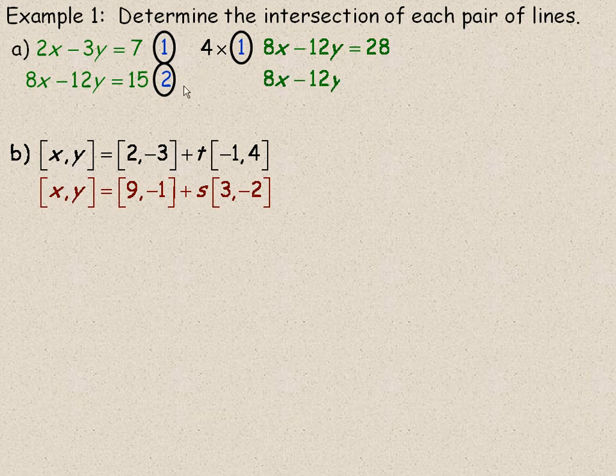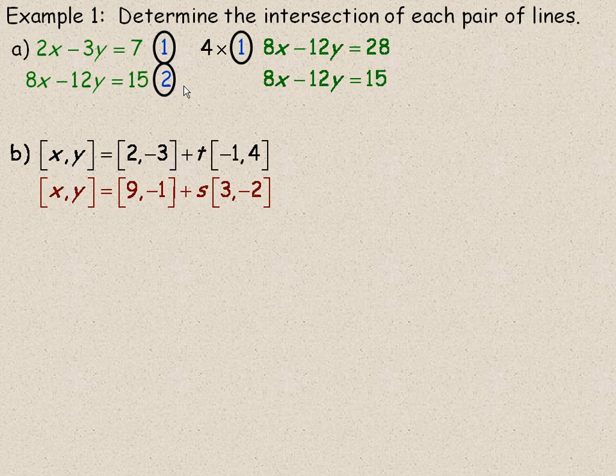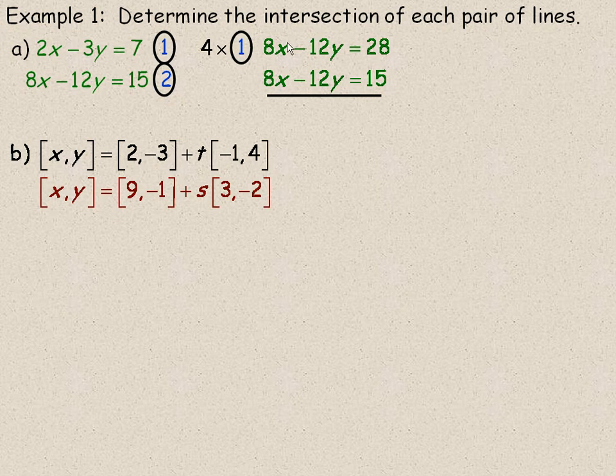Sometimes you will have to multiply them both by a number to get the common multiple. So I'll put a line here, and since the 8x's are the same, I am going to subtract.